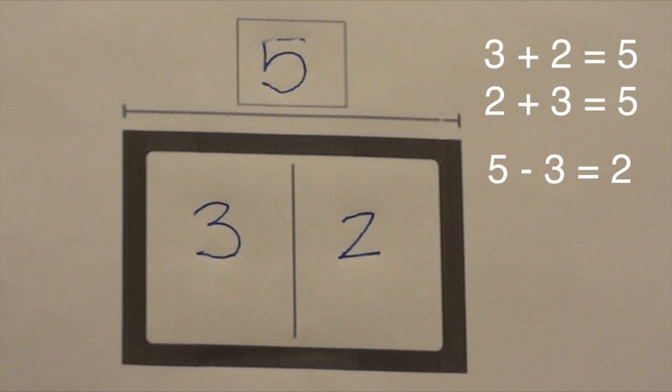When we flip the two parts they create a new math sentence: five minus two equals three. Did you notice that we only used three numbers while creating four number sentences? Those three numbers were a fact family. They help each other create many number sentences.